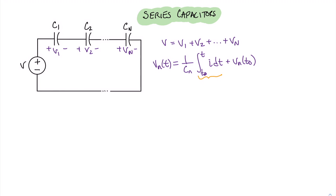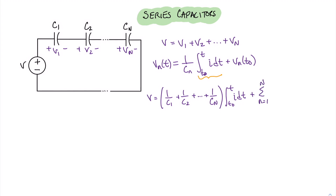The initial conditions will be different for each capacitor, but splitting the expression into a more manageable form: (1/C1 plus 1/C2 plus ... plus 1/CN) times the integral of i dt, plus the sum of all initial voltages, equals the supply voltage v. You can see how the series combination of capacitors plays out — the front portion is 1/C1 plus 1/C2 plus ... plus 1/CN. This gives us the clue: 1 over C_equivalent must equal the sum of 1 over each of the capacitances.